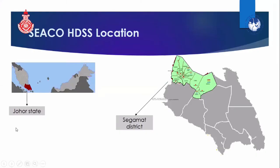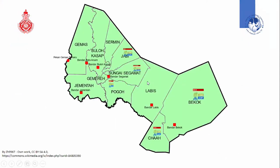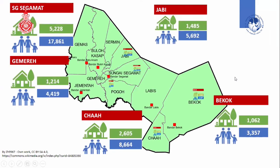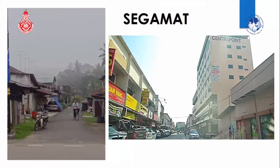SICO HDSS is located in Johor state in Malaysia — the southern state. Within Johor, Sagama District has 11 sub-districts, and SICO operates in five of them, covering approximately 12,000 households and around 40,000 individuals. Sagama District is a semi-urban area with both urban and rural areas — a very typical district in Malaysia.